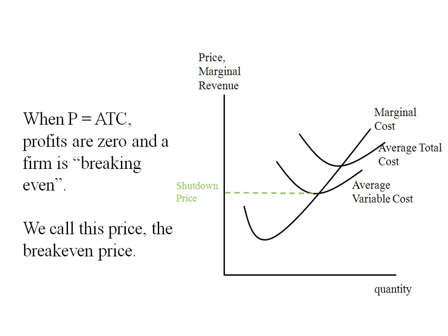On the right we have the graph we've previously seen, with the shutdown price at the minimum of the AVC. The break-even price is going to happen at the minimum of the ATC.